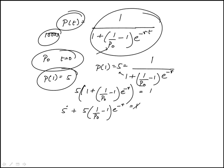So I can subtract 1, so this becomes 4, so this is equal to 0. So now I think I just have to move it to the next slide. So 4 plus 5 times 1 over P sub 0 minus 1 e to the minus r is 0.